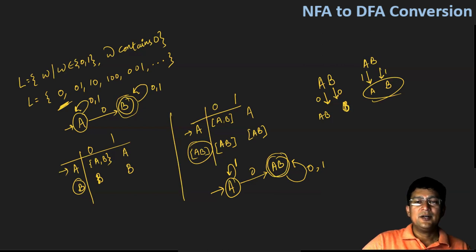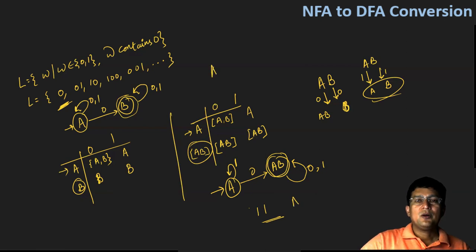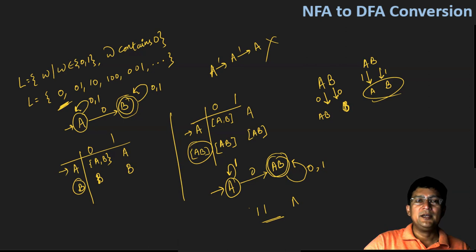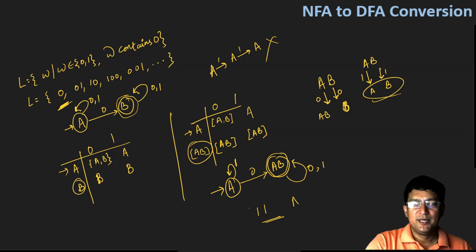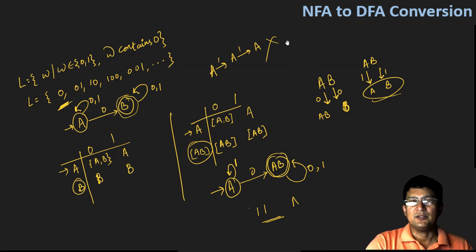This is the DFA for the given language. Acceptance is quite obvious. Let's reject some strings: one-one will be rejected. On A with symbol one, you remain at state A; on A with symbol one again, you remain at state A, which is not the final state, so the string is rejected. Obviously, one-one does not contain zero, so it gets rejected. I hope this makes sense. We will meet again with new examples on NFA to DFA conversion in subsequent lectures. Thanks for watching.